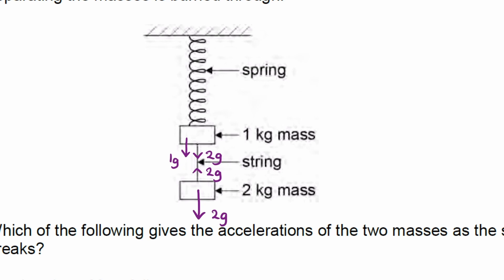So if the 1kg mass, which experiences two downward forces of total magnitude 3g, if that's in equilibrium, then there must be an upward force from the spring of magnitude 3g.